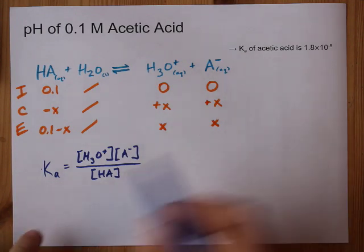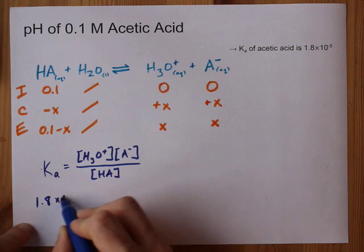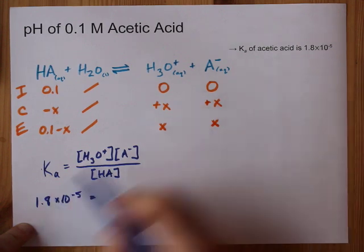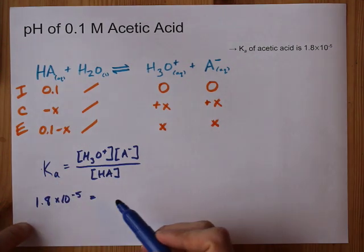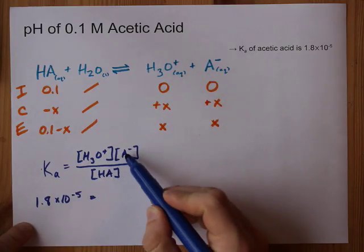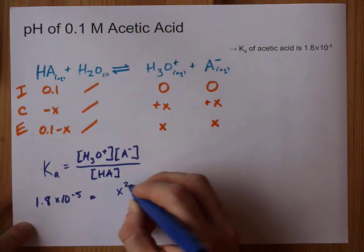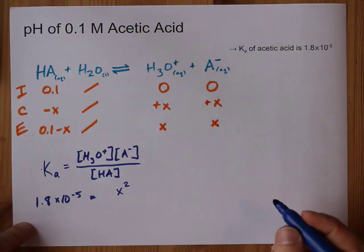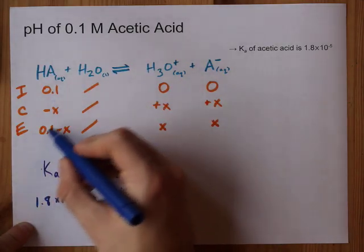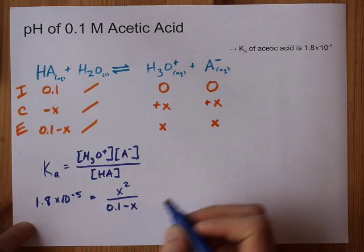Now I can plug in my numbers. 1.8 times 10 to the negative 5 equals — that's Ka on the left. My H3O+ is X, and my A- is also X, so that gives me X squared on top. And on the bottom, my equilibrium HA concentration is 0.1 minus X.